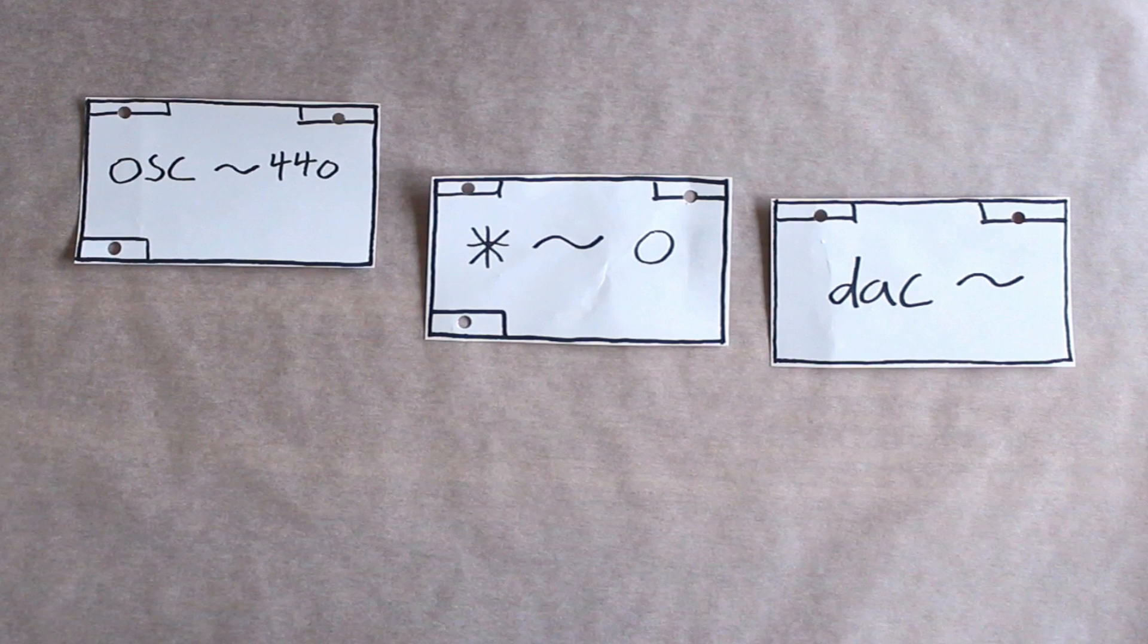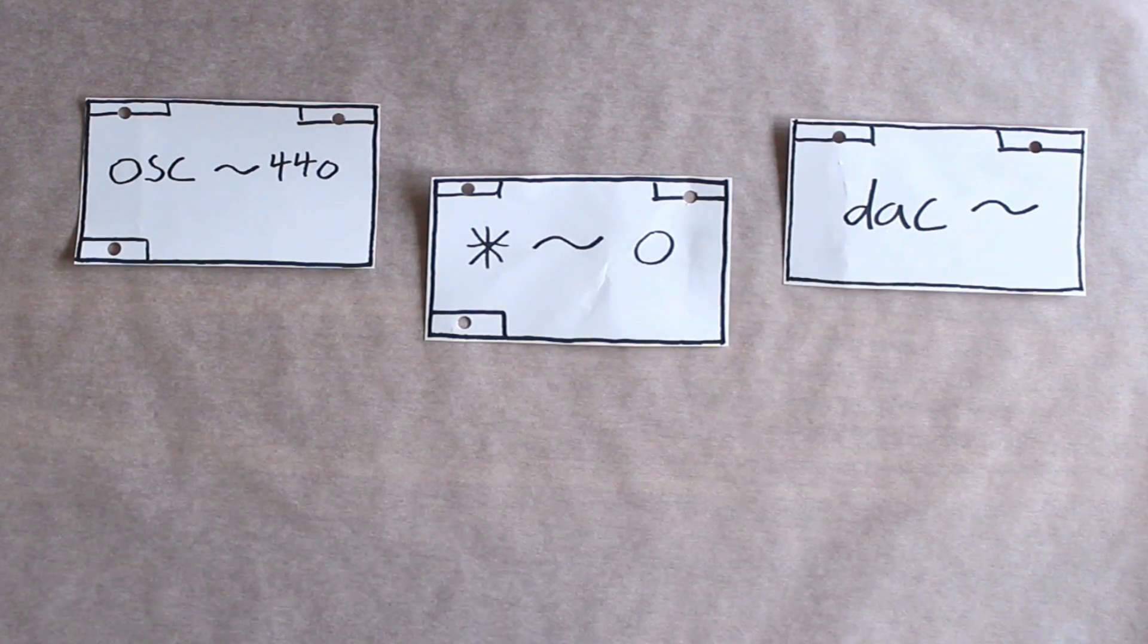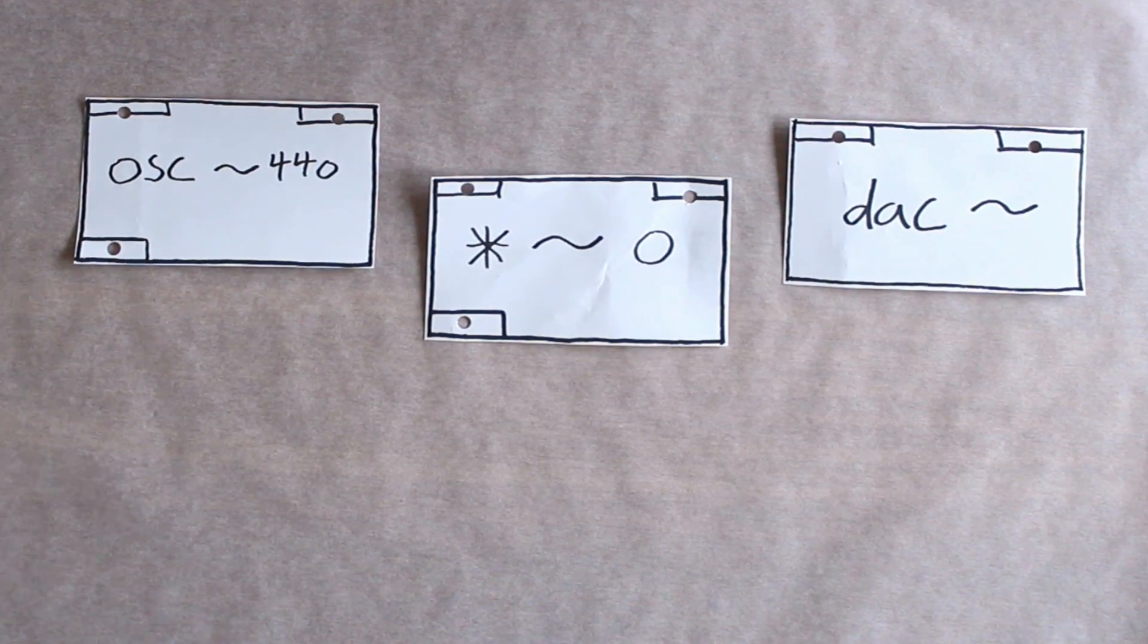The oscillator is the object that will make noise, and the DAC object will send that noise to your computer speaker.